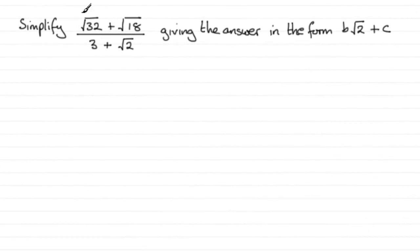Now in this part, we're asked to simplify the root of 32 plus root 18, all divided by 3 plus root 2, giving the answer in the form b root 2 plus c, where b and c are integers. So I'd start off first of all with writing down the question here, root of 32 plus root 18, all over 3 plus root 2.